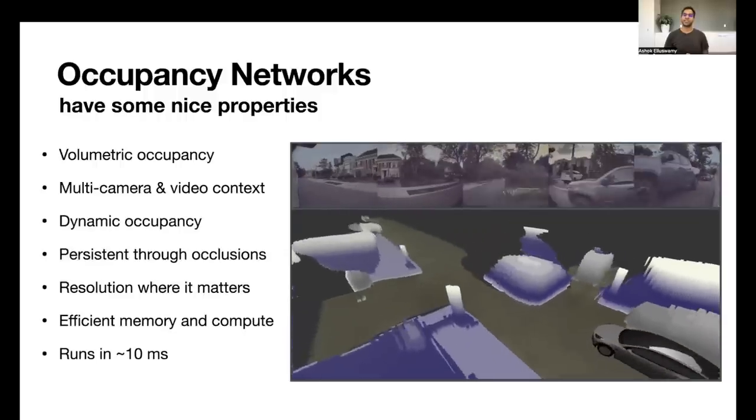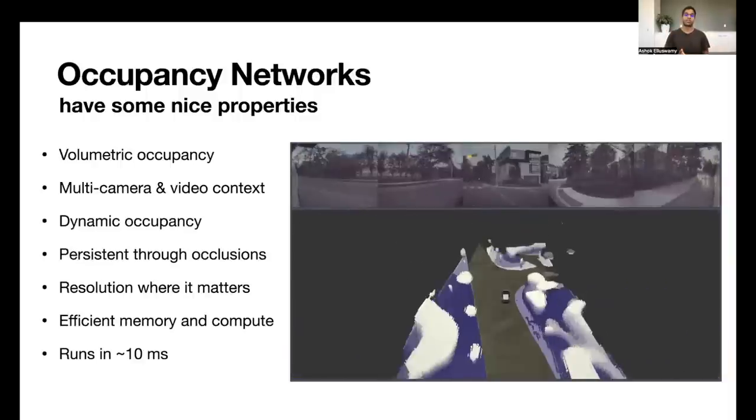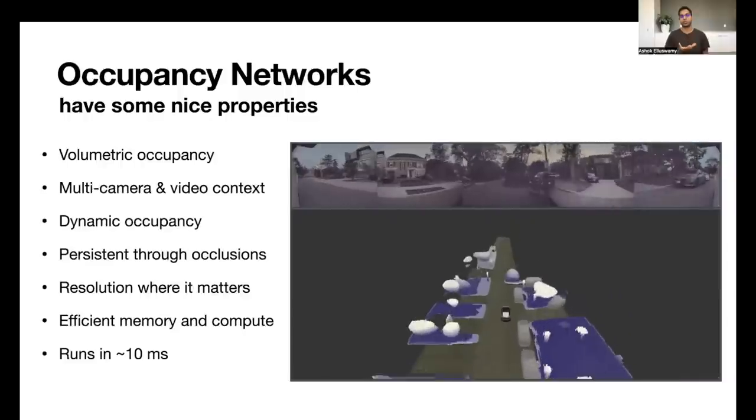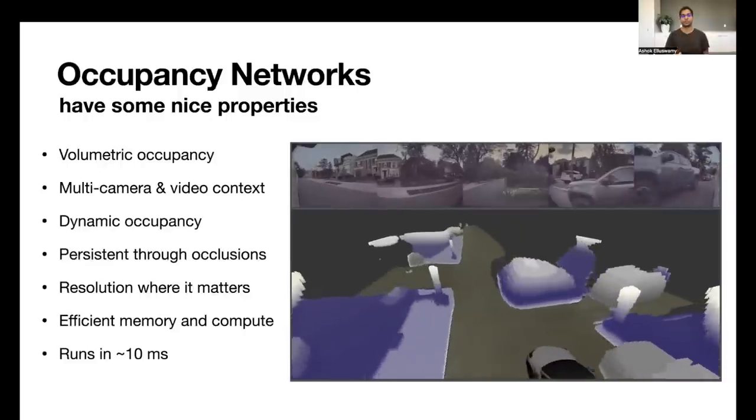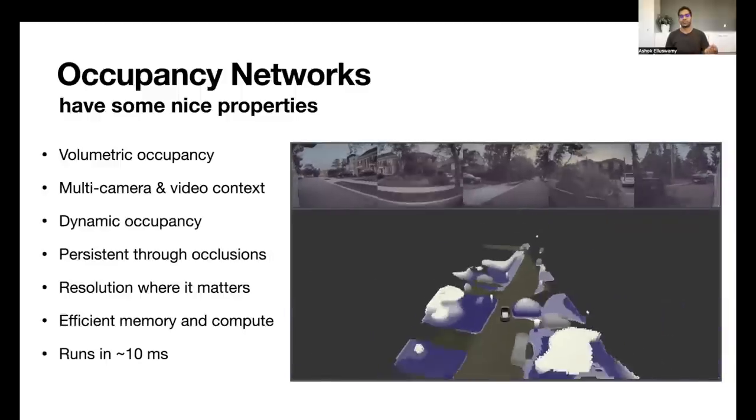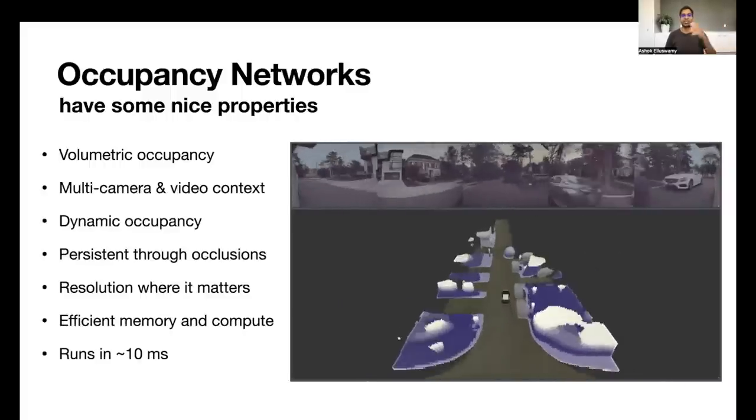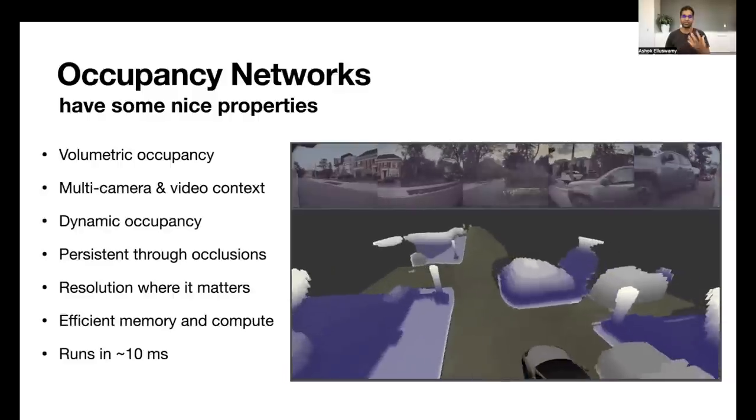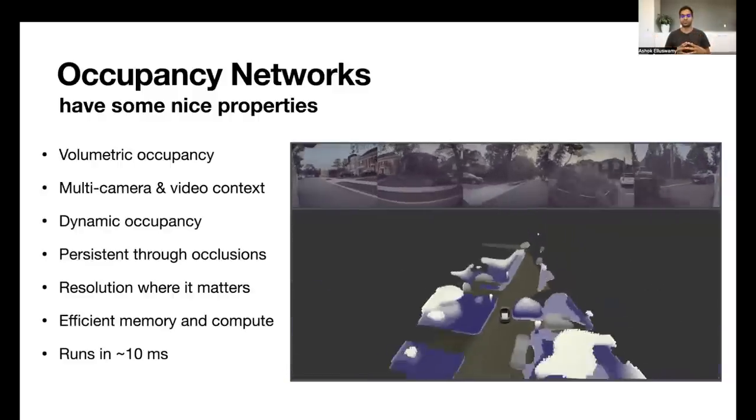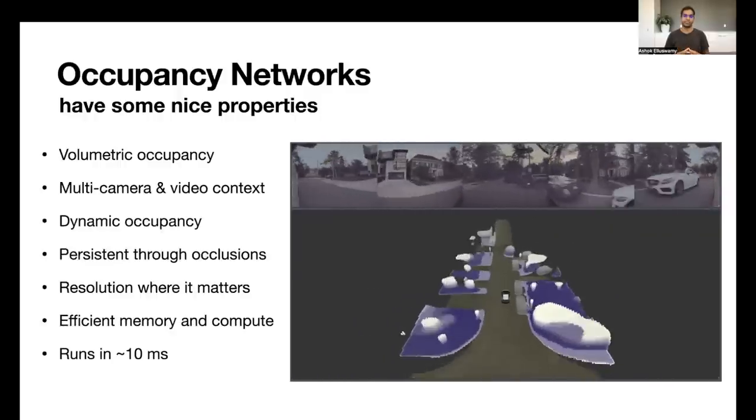Finally, this approach is extremely memory and compute efficient, even though on first sight, it might not appear so because it produced dense 3D occupancy. It might appear that the volume might be too large, but in the end, it turns out to be much more memory and compute efficient because it allocates resolution where it really matters. Like I mentioned earlier, dense depth or drivable space in the image, that is very low resolution far away and very, very high resolution close by. But in the occupancy networks, you get almost uniform resolution throughout the volume that is relevant for driving, and that makes it extremely efficient.